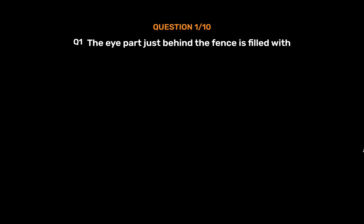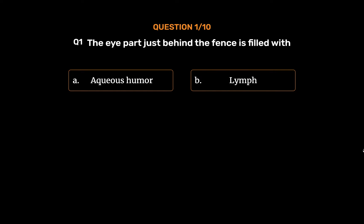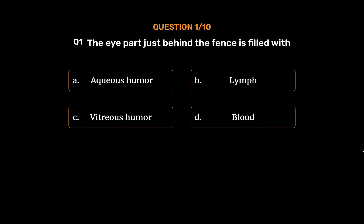Question No. 1. The part just behind the lens is filled with — Option A: Aqueous humor. Option B: Lymph. Option C: Vitreous humor. Option D: Blood. The correct answer is Option C: Vitreous humor.